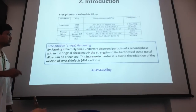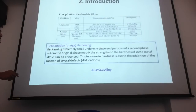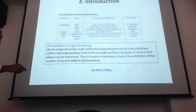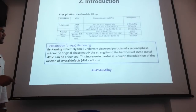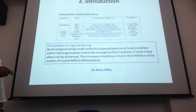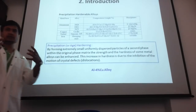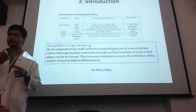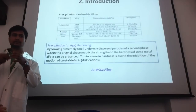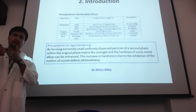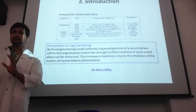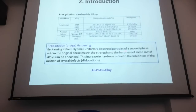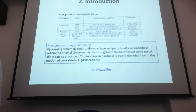By forming extremely small, uniformly dispersed particles of a second phase within the original phase, you make the material very strong. This hardness is due to inhibiting the motion of crystal defects. Basically, if you form very fine particles of a second phase uniformly dispersed in the first phase, these particles stop the movement of dislocations through the system. If you can stop dislocations, you can make your material even stronger.